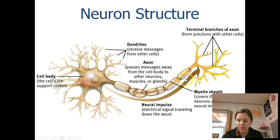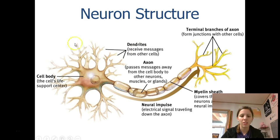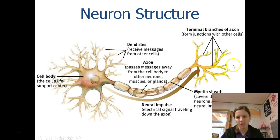The last part you need to know are called terminal branches — sometimes called terminal buttons or axon terminals; they're all the same thing. These are the part of the neuron that actually spits out the information to the next neuron. Information comes in on the dendrites, travels all the way down the neuron, and then the terminal branches spit out that information so the next neuron can pick it up — all the way up to my brain at about 200 miles an hour.